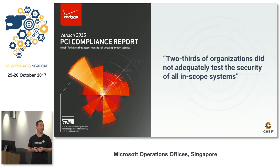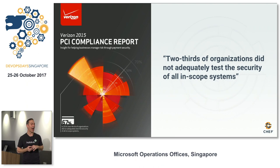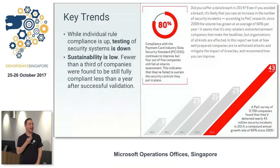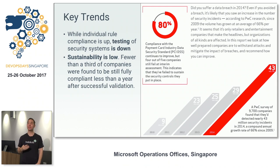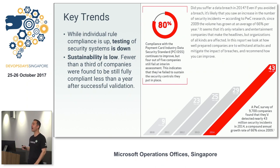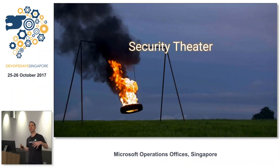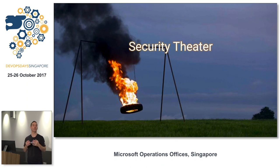You can't say every three months we're going to think about compliance, make the auditors happy, then let systems become insecure again. Verizon put out a state of PCI compliance report — right there on the cover it says two-thirds of organizations did not adequately test the security of all in-scope systems. People aren't even checking the machines they have today. These trends are continuing: you're getting more systems, moving into more diverse application sets, and sustainability is low. Keeping up with the amount of change, it's just not happening. Security theater is a thing — you go through the motions, get your compliance officers happy, pass the audits, even though it's a tire fire in the background.